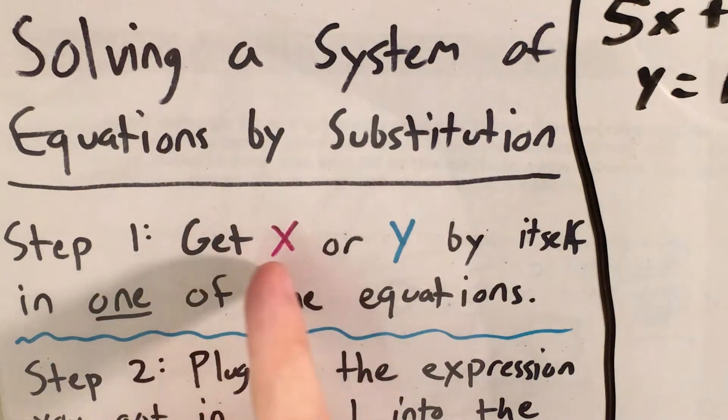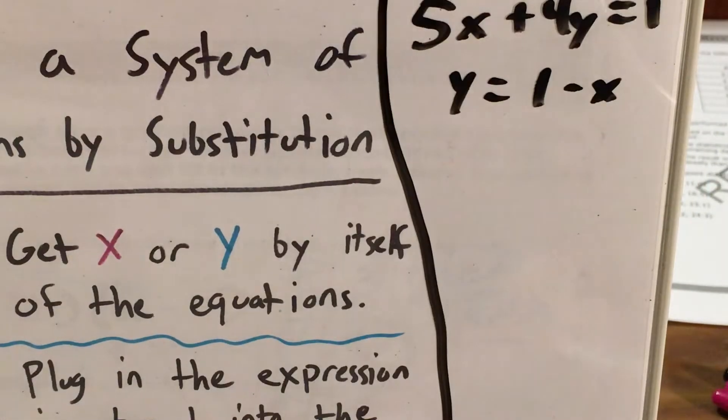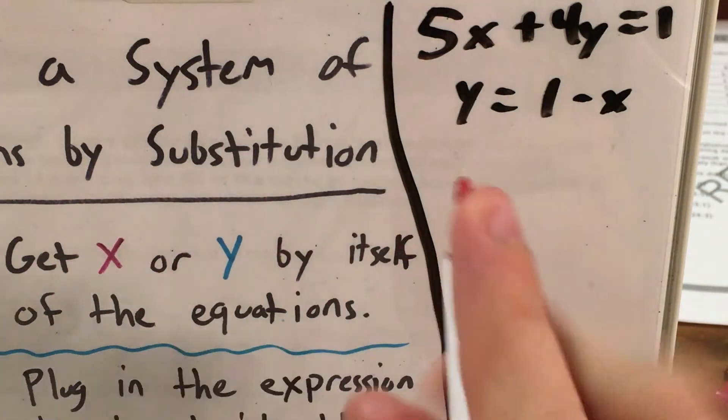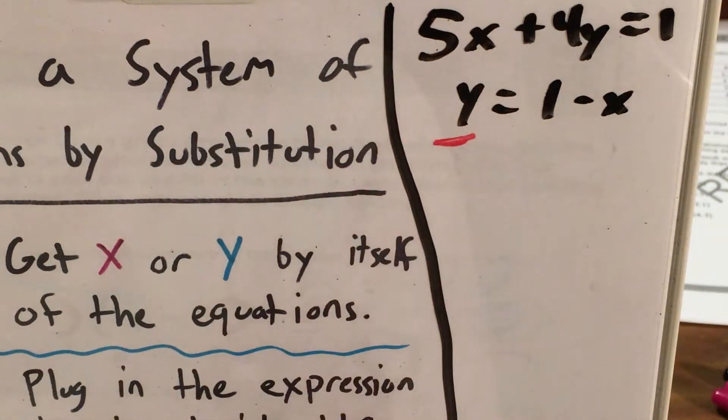Step 1 is to first get x or y by itself in one of the two equations that you're given. Now in this problem, it actually did that first step for us. It said that y equals 1 minus x. So we have y by itself, and that makes us happy. We're fine with that.